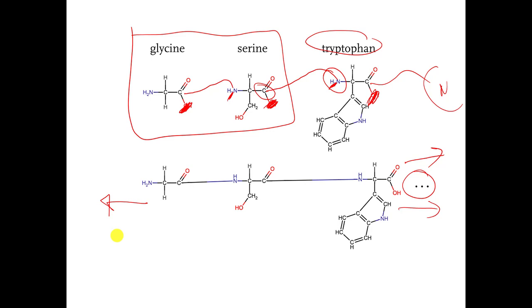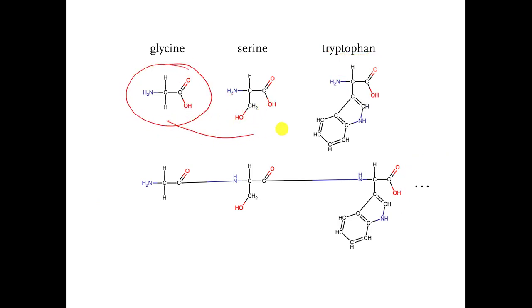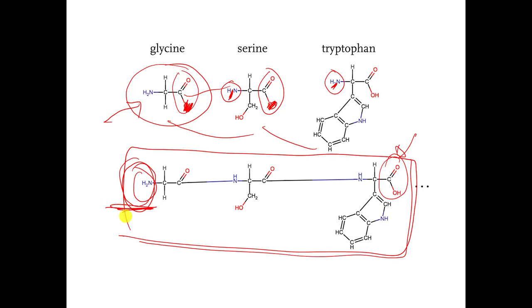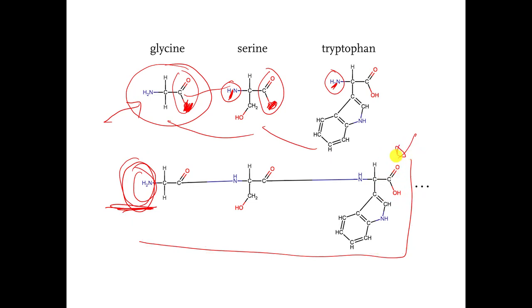I could also go in the other direction. When I connected the glycine to the serine to the tryptophan, this used to be a carboxylic acid functional group but I destroyed it by ripping out the OH. This used to be an amine, but I also kind of destroyed it when I connected the carbon to the nitrogen. Now look at the molecule we made — is there any place where an amine functional group did not get destroyed? Over here on the left side, that's the only place where an amine functional group did not get destroyed. And over here on the other side, this is the only place where the carboxylic acid didn't get destroyed, because we stopped at three. So one end has an amine functional group still intact, and the other end has a carboxylic acid functional group still intact.